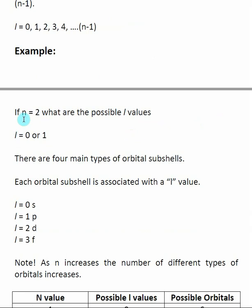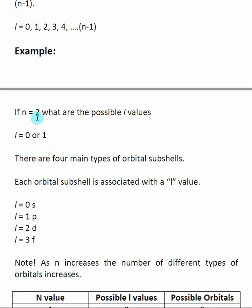For example, if an electron has an n value of two, the possible l values are zero or one. You start at zero and keep adding one until you reach n minus one, which in this case is one. So when n equals two, the possible l values are zero or one. This means there are two types of orbitals available when we are in the second stationary state or second shell of the atom.